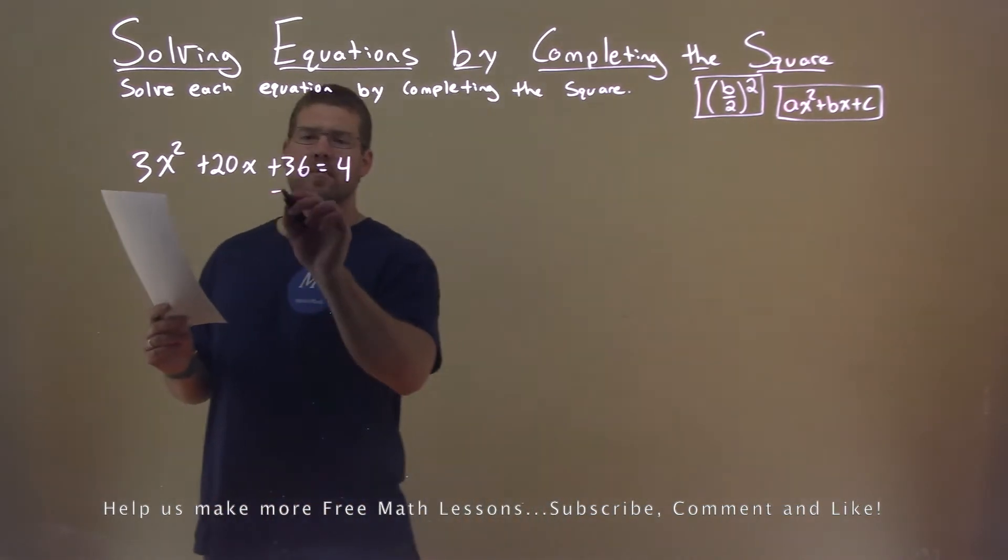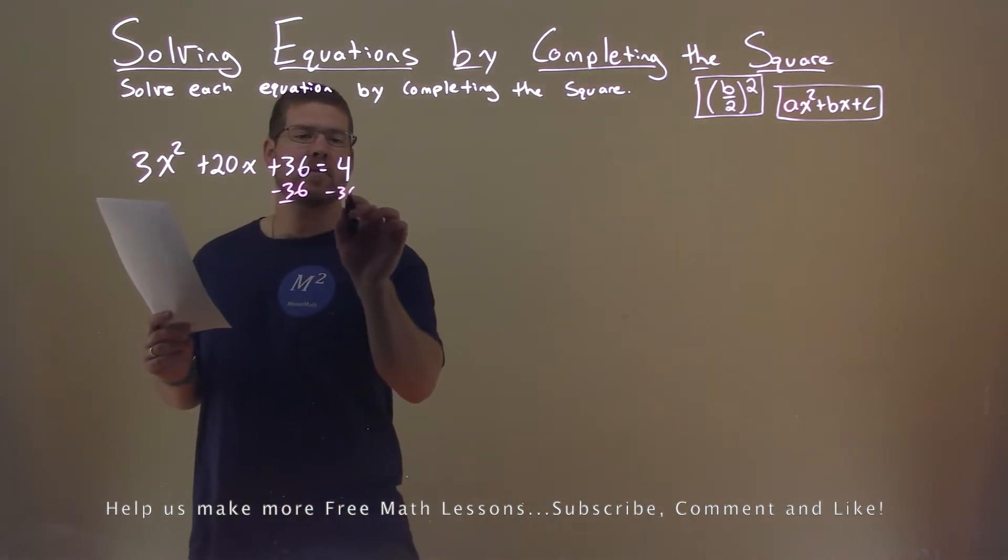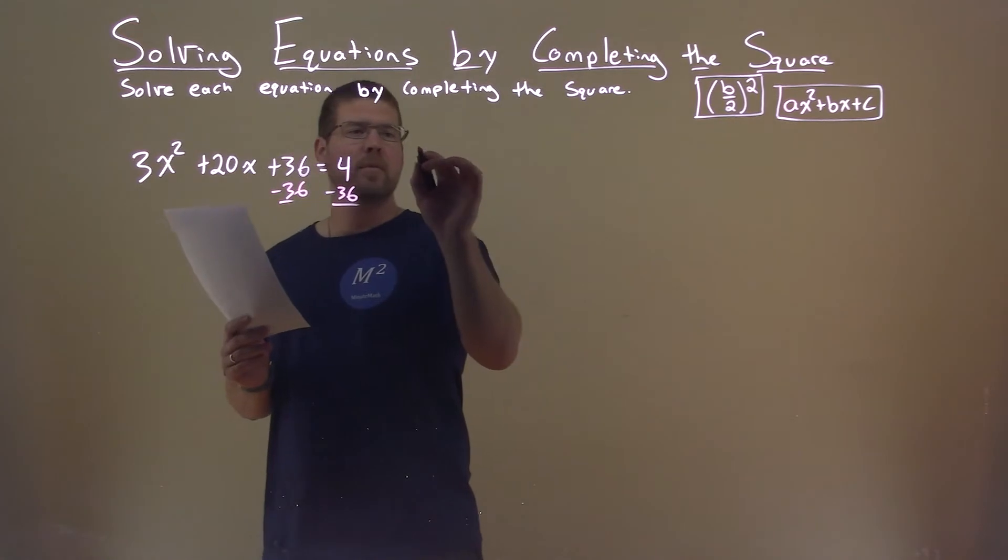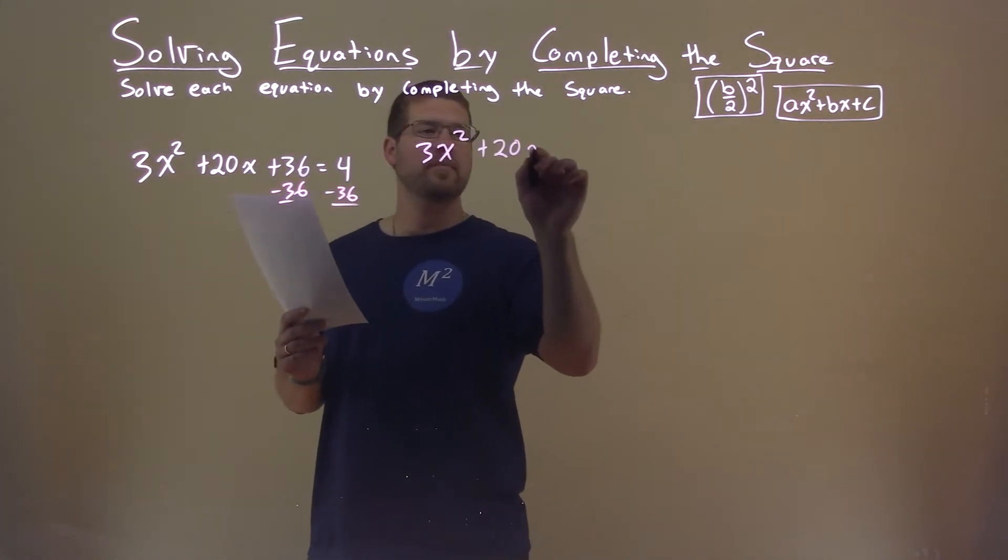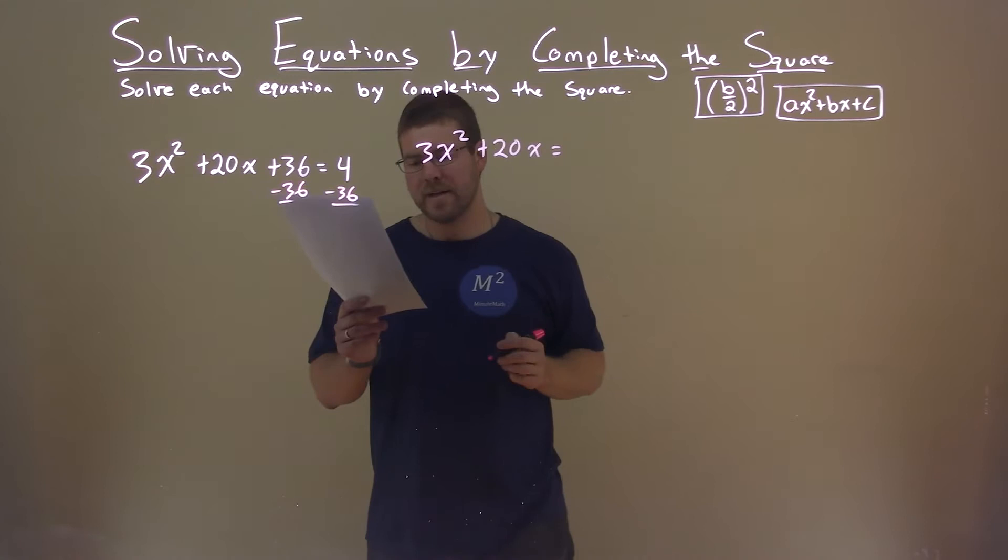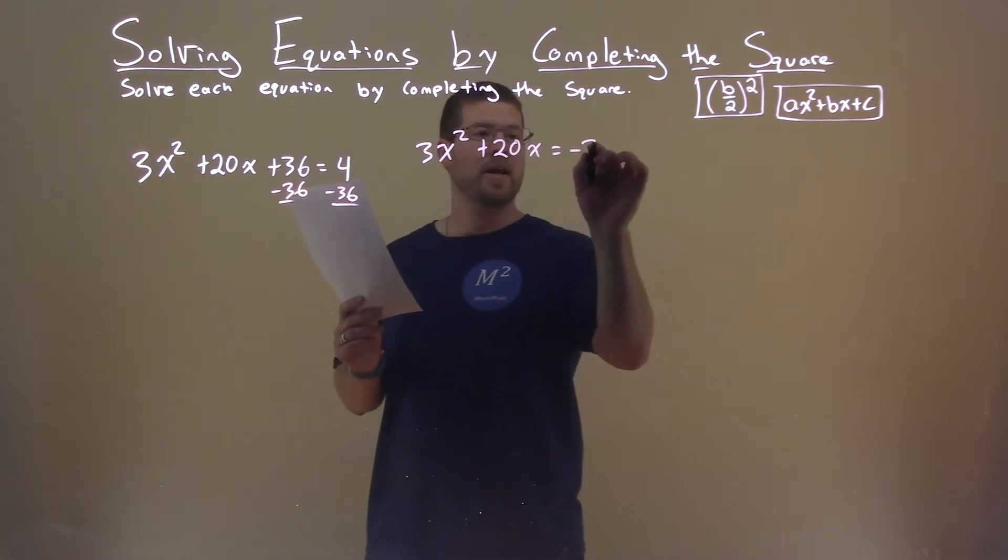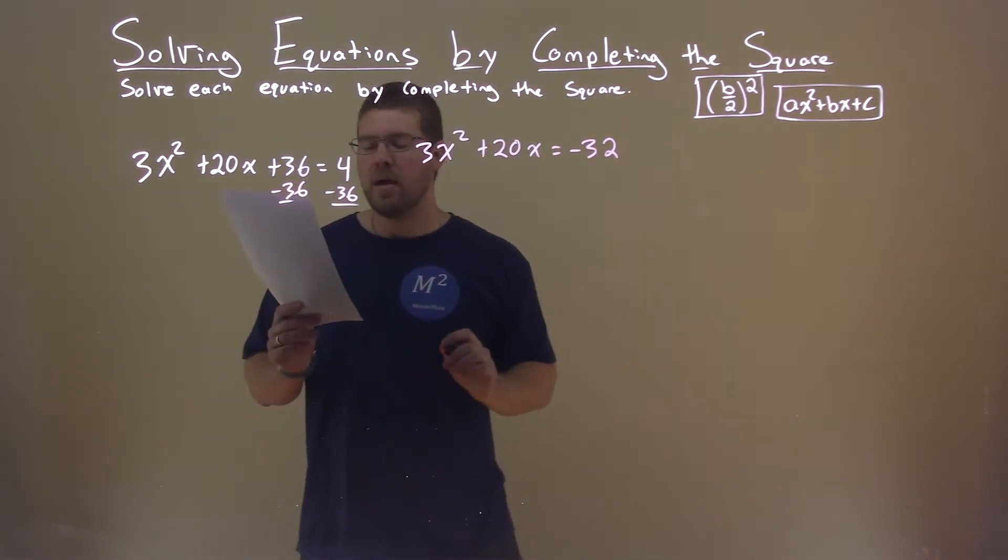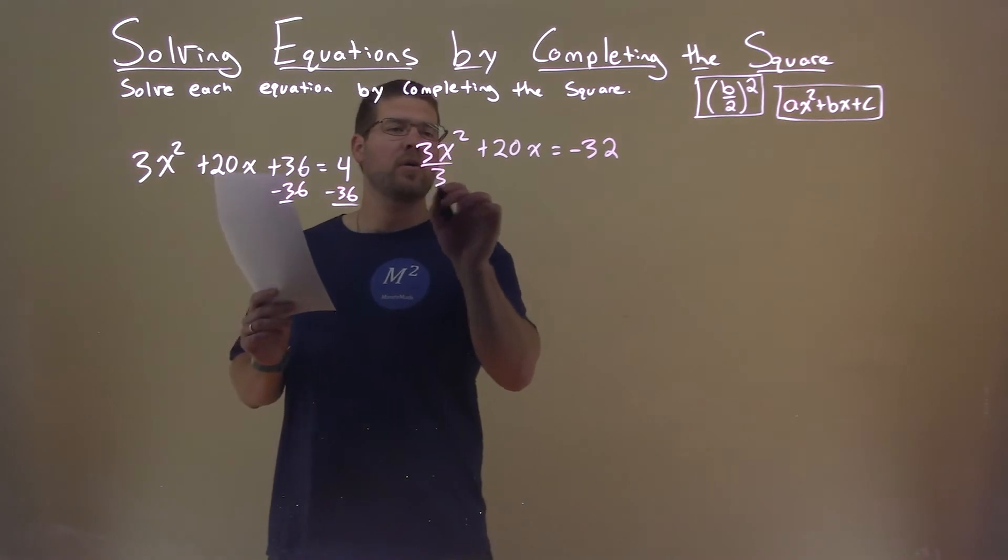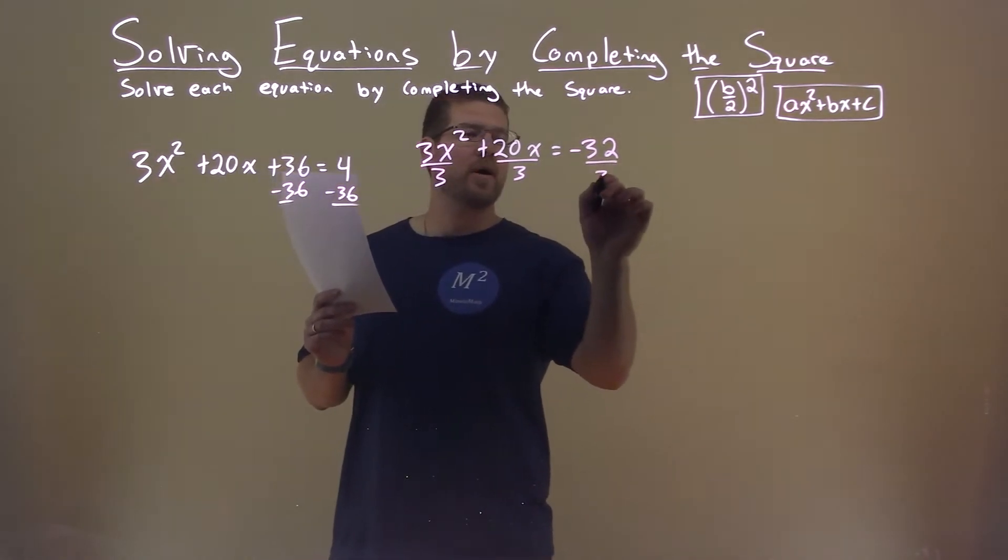First thing I'm going to do here is subtract 36 from both sides. That leaves me with 3x squared plus 20x equals 4 minus 36, which is negative 32. I'm now going to divide all parts, both sides really, by 3.